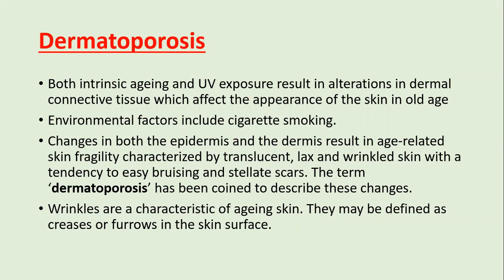At the start of the lecture, I am going to introduce a term called dermatoporosis. Dermatoporosis is skin aging, and aging affects both the epidermis and dermis. This aging results in increased translucency of the skin, skin fragility, laxity, wrinkling, and an easy tendency to bruise and form linear or stellate scars. Dermatoporosis occurs due to intrinsic aging, UV-exposed aging, and environmental factors like cigarette smoking.